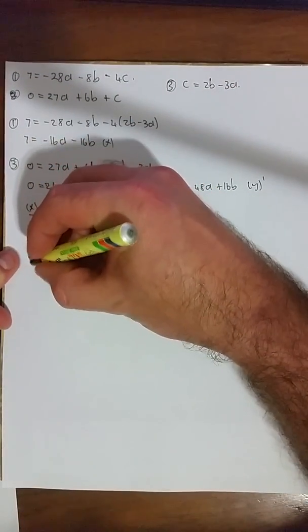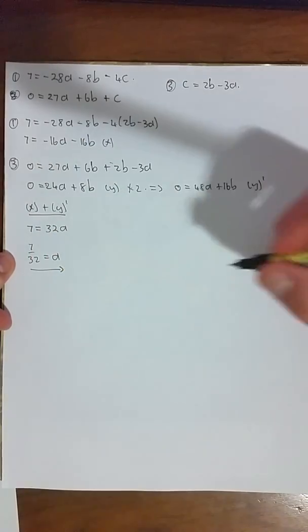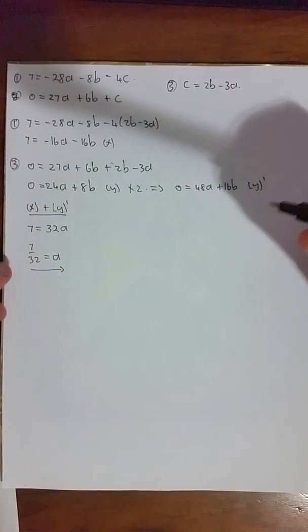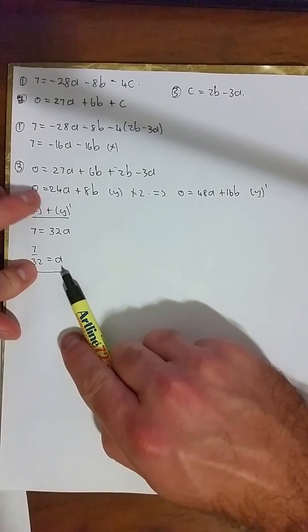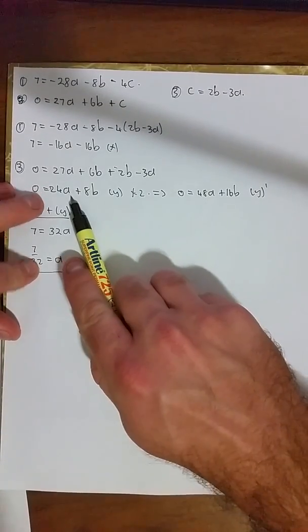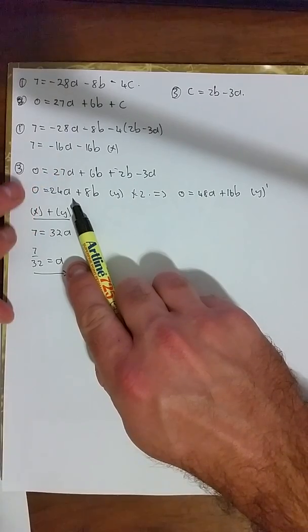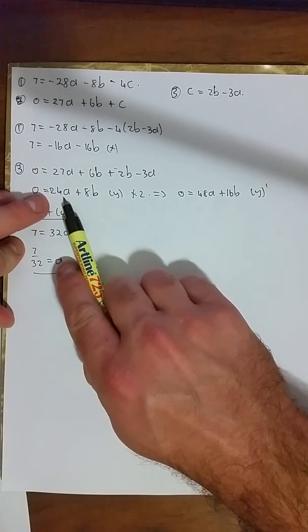So 7/32 = a. Good, we've solved one of the unknowns. Now, what can we do? Obvious next step is to substitute this a value into this equation or that equation, either one that has only a's and b's. Let's say we put it in here.